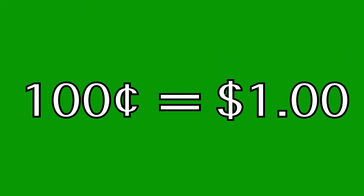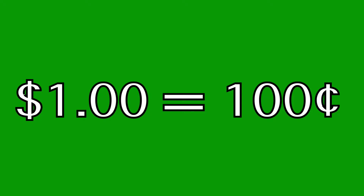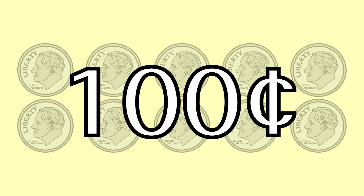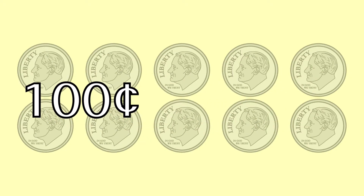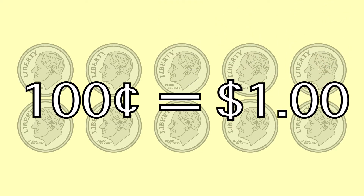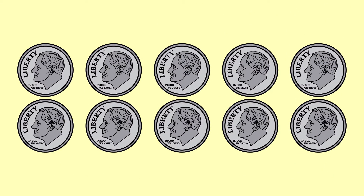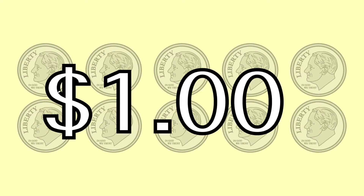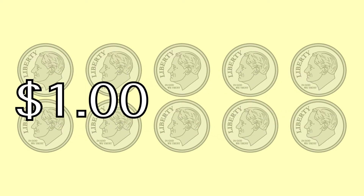First we teach them to count — one, two, three, four, five — and then we change the rules on them. We show them a five dollar bill, or a nickel, and say one of these equals five. And then we have two different words for money, dollars and cents, which have different values. So this project is my attempt to clarify this whole mess.